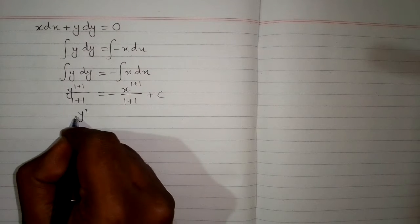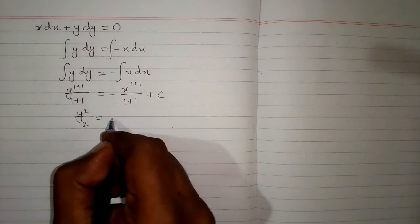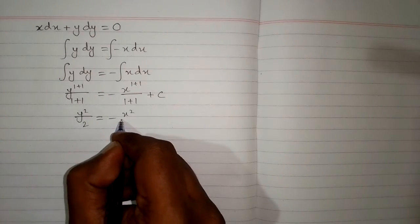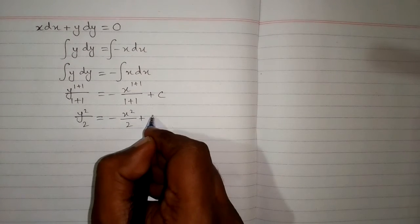Now we have y square upon 2 is equal to minus x square upon 2 plus c.